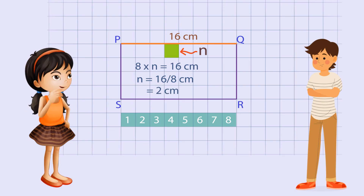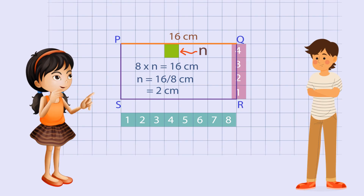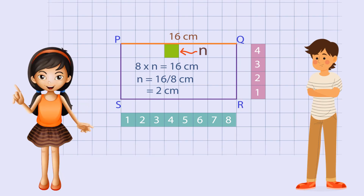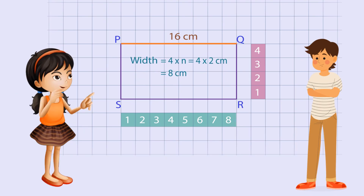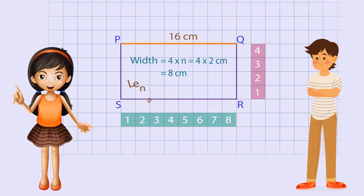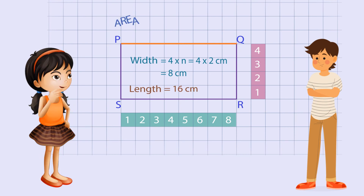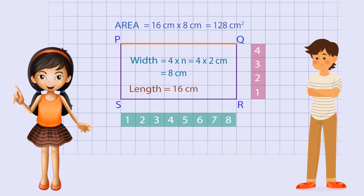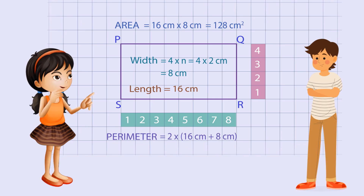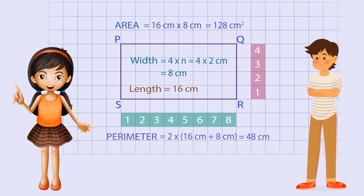Then, we count the number of squares along the width. There are 4 of them. So, the width equals 4 into N, equals 4 into 2 cm, equals 8 cm. Now we know the length and width both. The area equals 16 cm into 8 cm, equals 128 cm². And the perimeter equals 2 into (16 cm plus 8 cm), equals 48 cm.